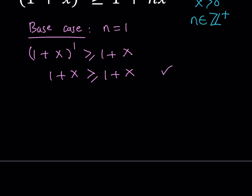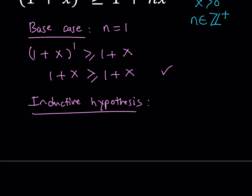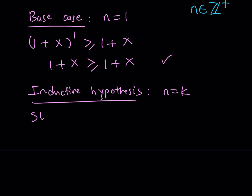Let's take a look at the inductive hypothesis. The inductive hypothesis is basically going to be the case for n equals k. So what we're going to do is suppose that this statement is true for n equals k: 1 plus x to the power k is going to be greater than or equal to 1 plus kx.